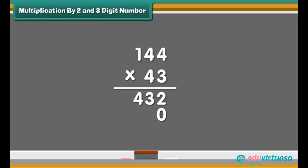Now add a 0 on the 1's place. Multiply 4 with the number 1 on 100's and add 1 which was carried forward. Write 5 in the 1000's place. Now add 2 values. We get 6192. So, 144 multiplied by 43 is 6192.